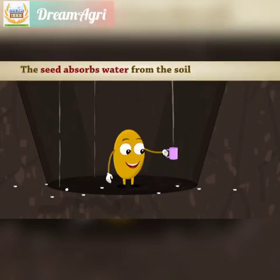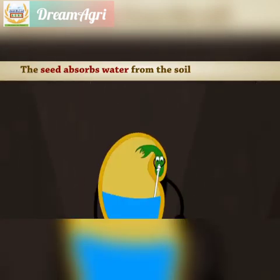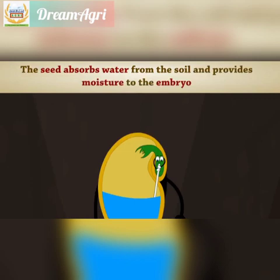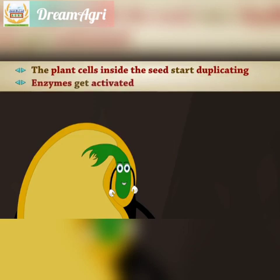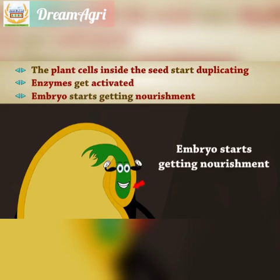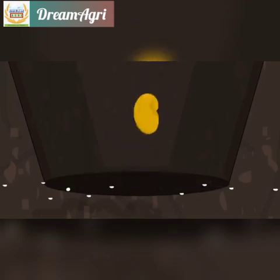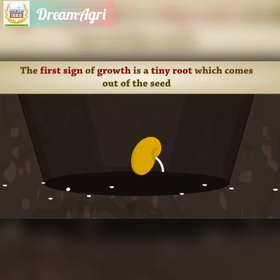The seed absorbs water from the soil and provides moisture to the embryo. The plant cells inside the seed start duplicating. Enzymes get activated. The embryo starts getting nourishment. The first sign of growth is a tiny root which comes out of the seed.